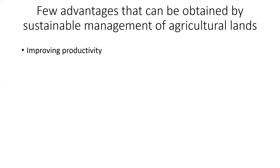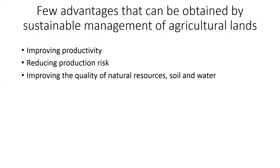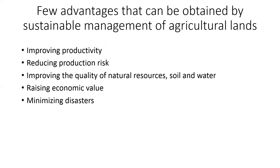A few advantages that can be obtained by sustainable management of agricultural lands: improving productivity, reducing production risk, improving the quality of natural resources such as soil and water, increasing economic value, minimizing disasters, and minimizing effects to the environment.